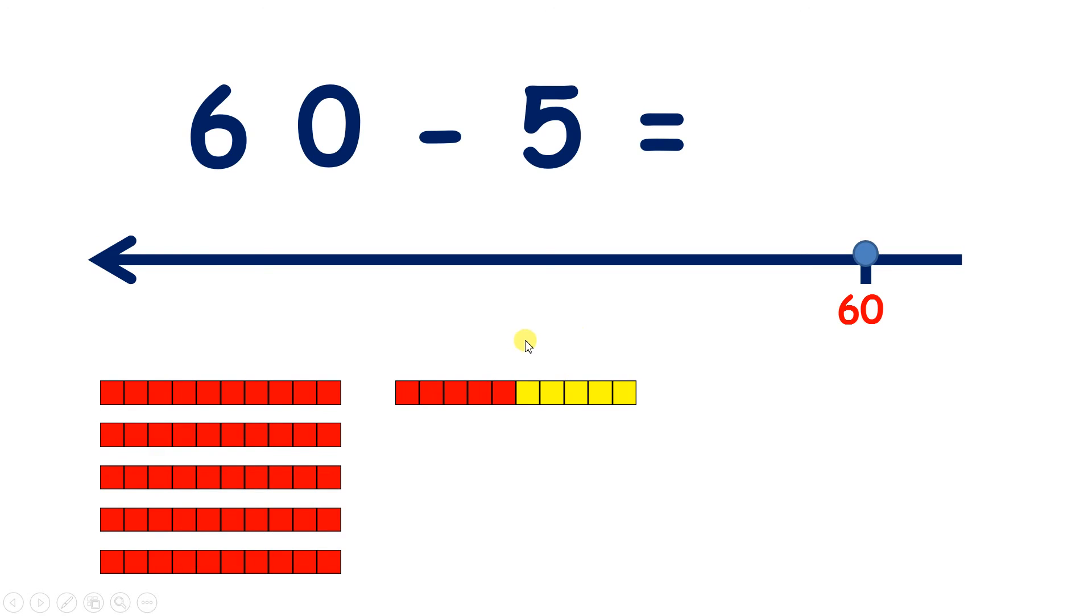So on a number line, I can jump back from 60 to 55 without needing to count back. 60 take away 5 is 55.